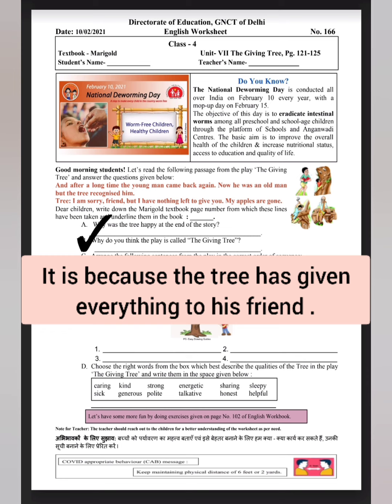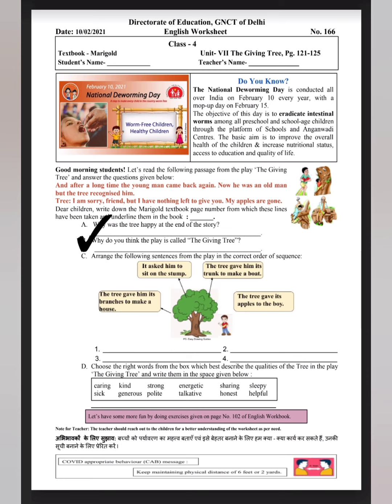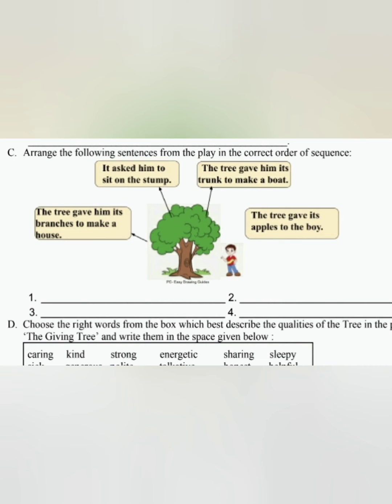Question C: Arrange the following sentences from the play in the correct order of sequence. You have four sentences. You have to write these sentences in the correct order. So I am reading sentences from the left side. The tree gave him its branches to make a house. It asked him to sit on the stump. The tree gave him its trunk to make a boat.